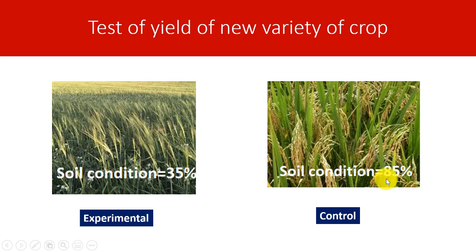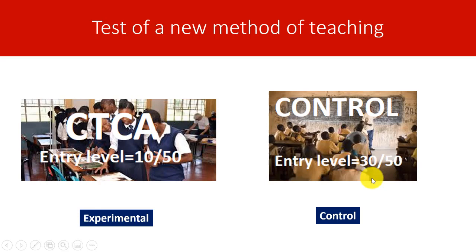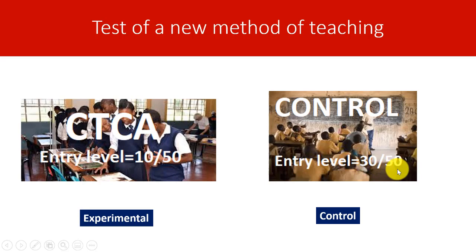Let's go on to education. I want to try out a method of teaching — the CTC approach — for one group, with the other being the control. The topic is energy flow in the ecosystem. Unknown to you, the CTC group has an entry level of 10 out of 50, and the control has 30 out of 50. At the end of treatment, the CTC group scores 35 and the control scores 42 out of 50. You can't justifiably conclude that the control did better because you haven't recognized the entry level characteristics of each group.